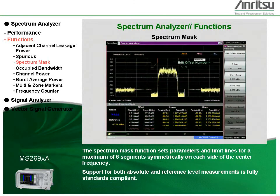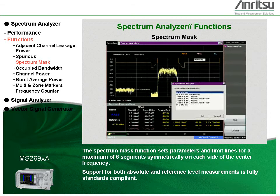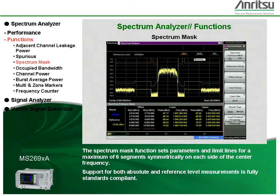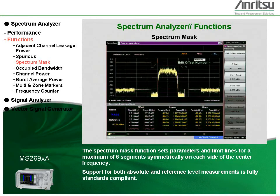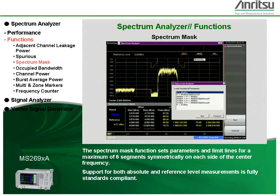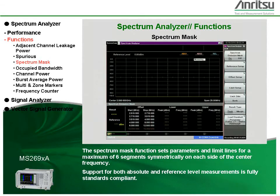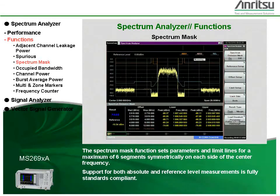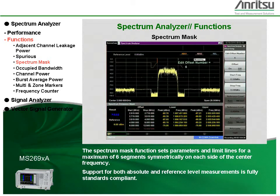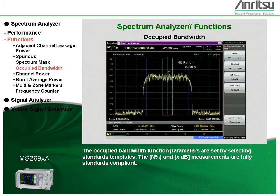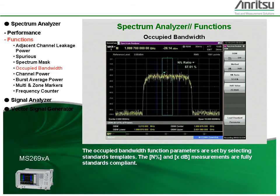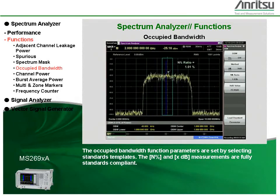The spectrum mask function sets parameters and limit lines for a maximum of 6 segments symmetrically on each side of the center frequency. Support for both absolute and reference level measurements is fully standards compliant. The occupied bandwidth function parameters are set by selecting standards templates. The N% and XdB measurements are fully standards compliant.